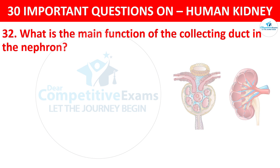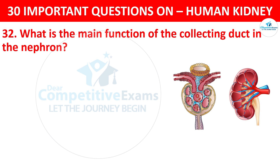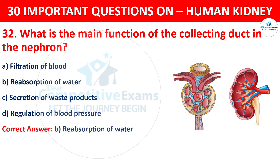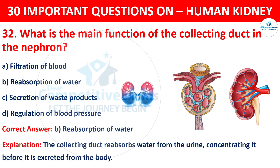What is the main function of the collecting duct in the nephron? The options are filtration of blood, reabsorption of water, secretion of waste products, or regulation of blood pressure. The correct answer is B, that is reabsorption of water. The collecting duct reabsorbs water from the urine, concentrating it before it is eliminated from the body.